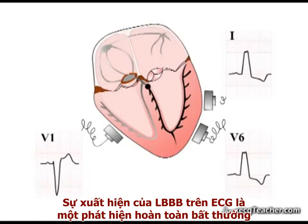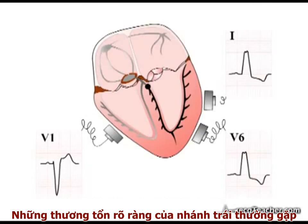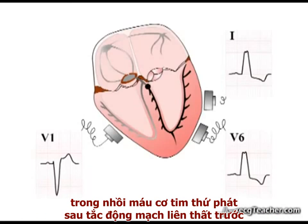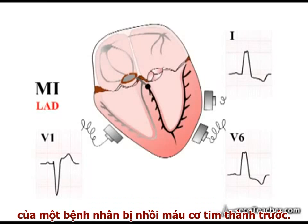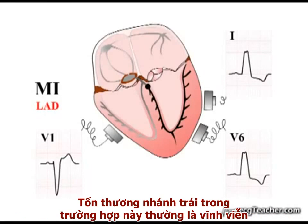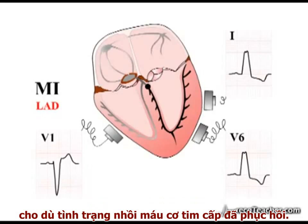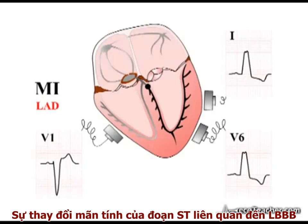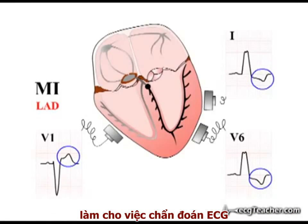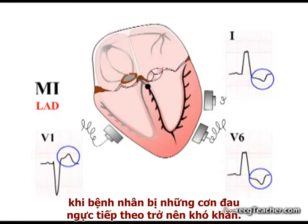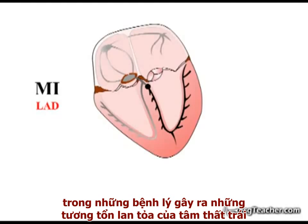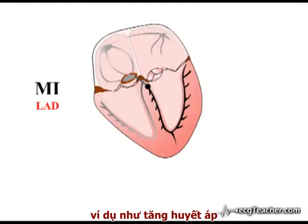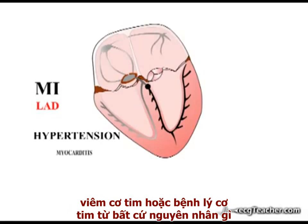Each block on an ECG is a highly abnormal finding. Significant damage to the left bundle branch is commonly seen in infarction secondary to obstruction of the left anterior descending artery. A new onset left bundle branch block may be the presenting ECG abnormality in a patient with anterior MI. Damage to the left bundle branch in this situation tends to be permanent, and the chronic ST changes associated with left bundle branch block then make interpretation of the ECG at subsequent presentations with chest pain difficult. The left bundle branch may also be damaged in diseases causing diffuse damage to the left ventricle, for example hypertension, myocarditis or cardiomyopathy from whatever cause.